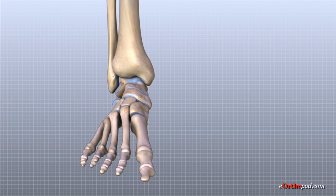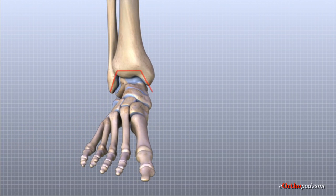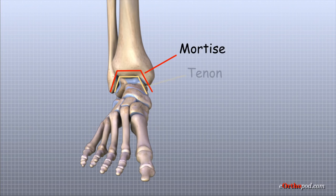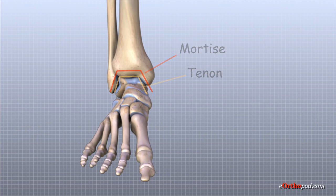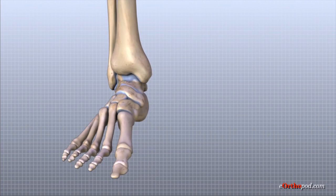The ankle socket is sometimes referred to as the mortise of the ankle because the structure of the ankle joint is similar to a joint used in woodworking called a mortise and tenon joint. It has been used by craftsmen for centuries to create strong, sturdy connections in furniture and buildings.